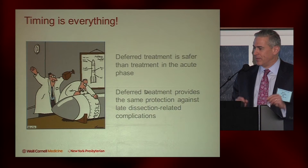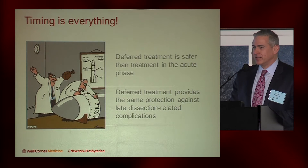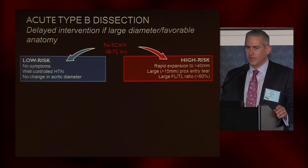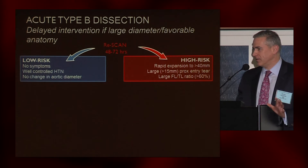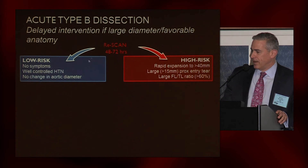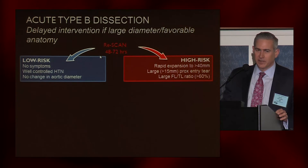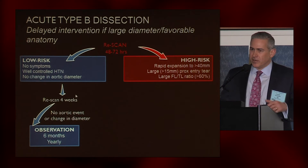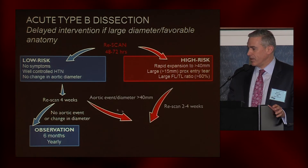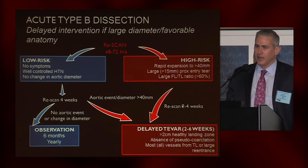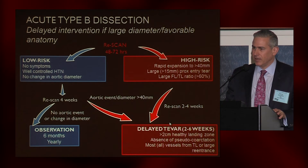Overall, timing is everything. Deferred treatment is definitely safer than treatment in the acute phase if you're going to treat uncomplicated dissections, and it appears to provide the same protection against late dissection-related complications. For an algorithm about uncomplicated acute type B dissections: initially, perform a scan and evaluate symptoms at presentation. Based on anatomic criteria, determine if the patient is low risk or high risk. Low-risk patients continue with imaging surveillance and optimal medical therapy. Higher-risk patients, or those whose anatomic features convert to high risk, get re-scanned earlier and are considered for delayed treatment in the subacute phase.